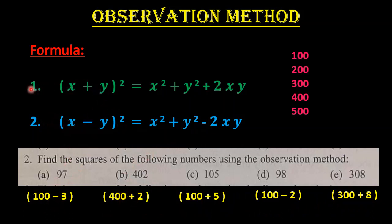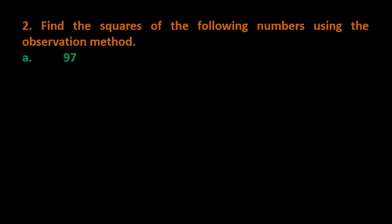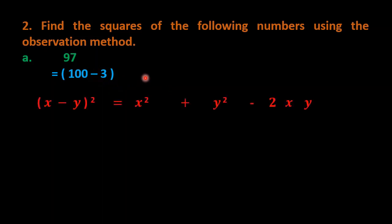Now let us solve question 2a: find the square of 97 using the observation method. Since 97 = 100 − 3, and there is a minus sign, we use the second formula: (x − y)² = x² + y² − 2xy, where x = 100 and y = 3.